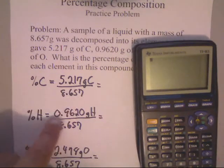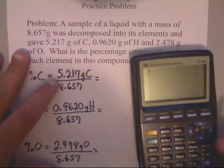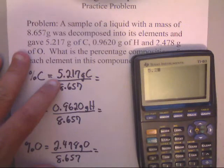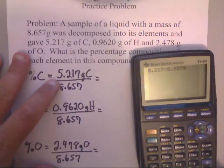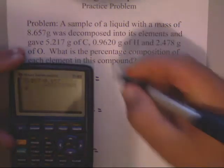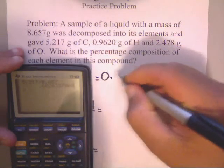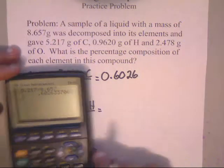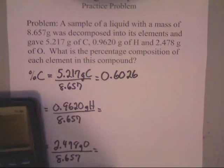We punch these in individually. I like to go out to four numbers behind the decimal, and so does the person who gave us the problem. This is 5.217 divided by 8.657. I end up getting that number, so going out four places gives me 0.6026.